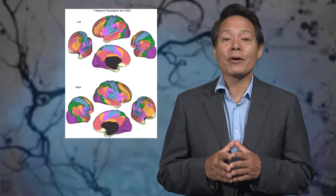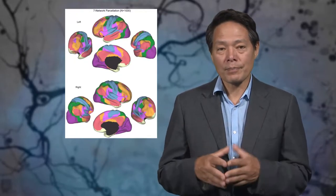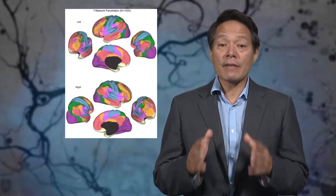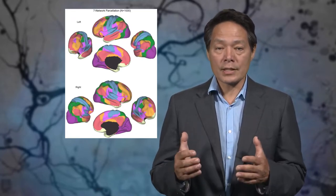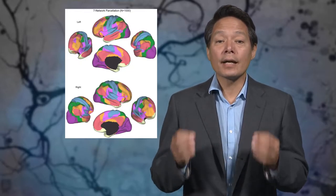Here are some lovely fMRI data from a 2011 paper by Yeo, Buckner, and others. What you see here is a parcellation of the cortex into seven main cortical regions. These areas were found using so-called functional connectivity analysis.